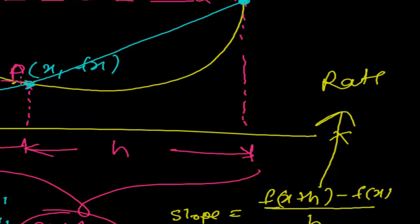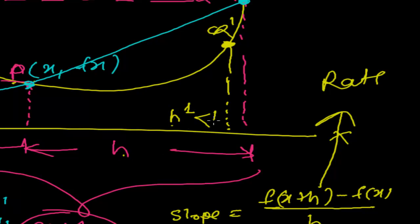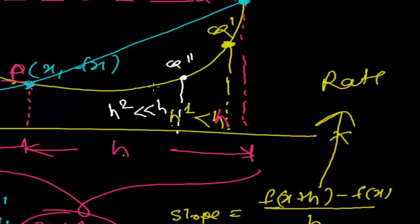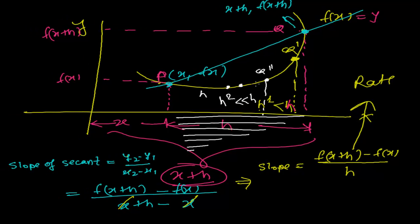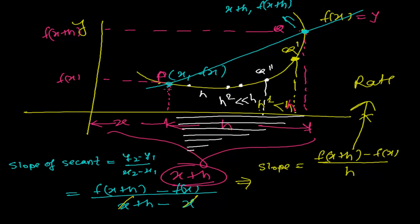If I need to find how the function is changing between p and a closer point q-dash, I will use the coordinates of q-dash in the formula, and at that time h1 will be less than the original h. As I go closer to point p with q-dash-dash, the value of h decreases more and more. As I am going closer to the p point, the value of h is gradually decreasing, decreasing, and decreasing.